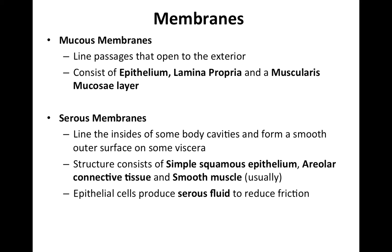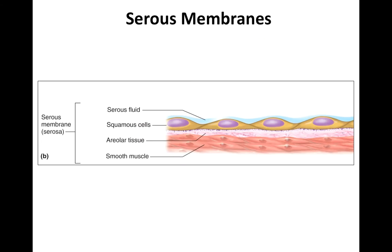In these structures, you'll find simple squamous epithelium — very thin epithelium — with areolar connective tissue supporting it, and then also a little bit of smooth muscle. These epithelial cells are going to produce serous fluid to help reduce friction. This is a watery kind of fluid. Here is your simple squamous epithelium, and these cells are producing a little bit of serous fluid.